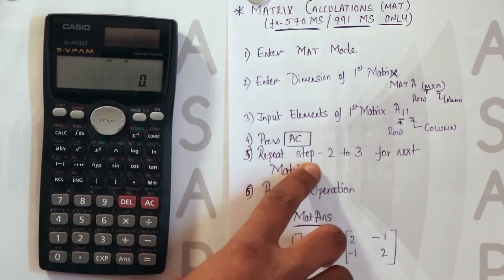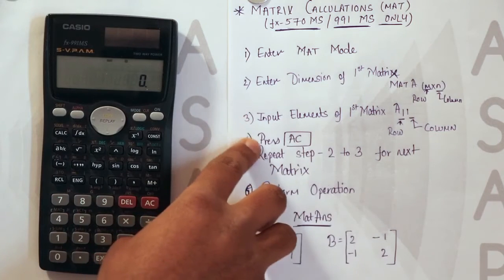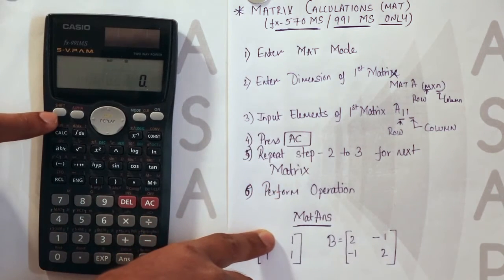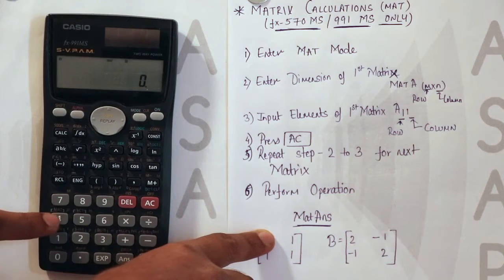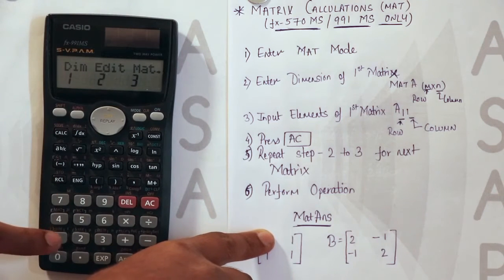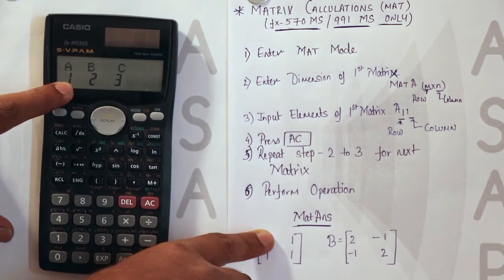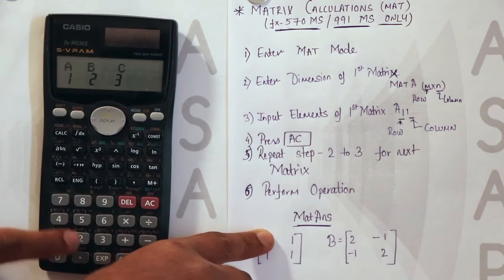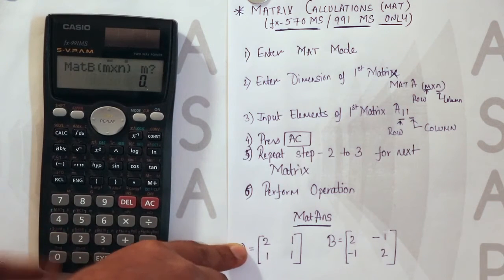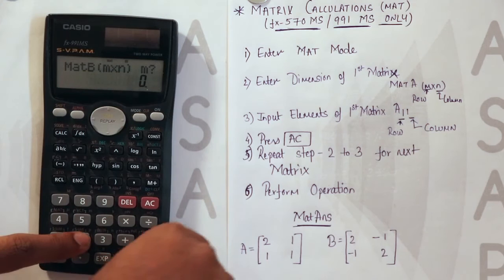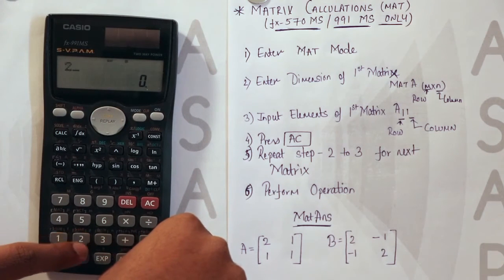Now we will repeat the steps 2 to 3 for the next matrix. So again we will go and shift then 4 dimension. Since A we have already entered. It is saved in the memory. We will go for matrix B that is 2. Again the same procedure. The dimensions. 2 by 2.